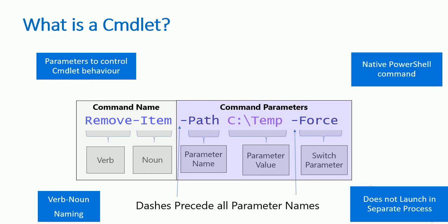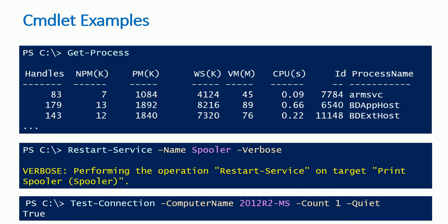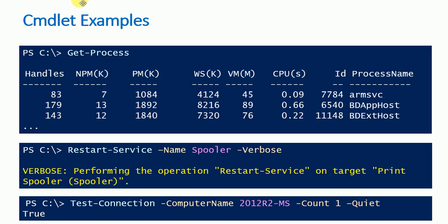A cmdlet is a native PowerShell command and does not launch a separate process. Examples of cmdlets include: Get-Process to get all running processes, Restart-Service -Name Spooler to restart a service, and Test-Connection -ComputerName [name] -Count 1 -Quiet to test connectivity.